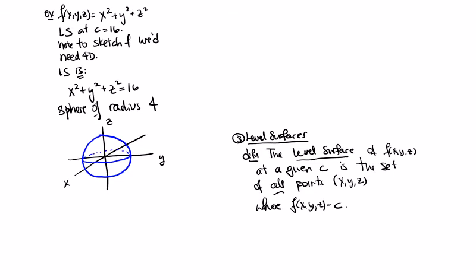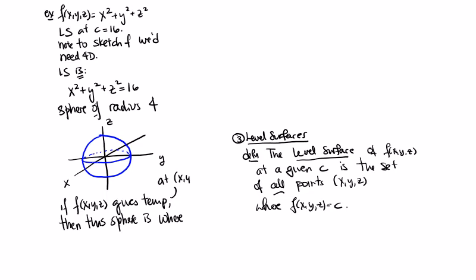The level surface is a hollow sphere. Using the temperature analogy, if f gives the temperature at a point in 3-dimensional space, then this sphere is where the temperature is 16 degrees Celsius. If you stay on that sphere, that's where that temperature is. So even without being able to sketch the function itself, we can sketch the level surface and gain some understanding of what's going on.